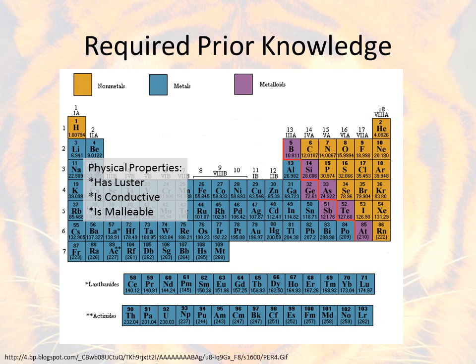In 6th grade, what we really wanted you to get out of that was that there's physical properties for these elements. And for metals, we usually see that they have luster, so they're usually shiny. They're usually conductive, so heat and electricity can pass through them. And they're usually malleable, which means we can hammer them into different shapes, and it still holds their current properties.